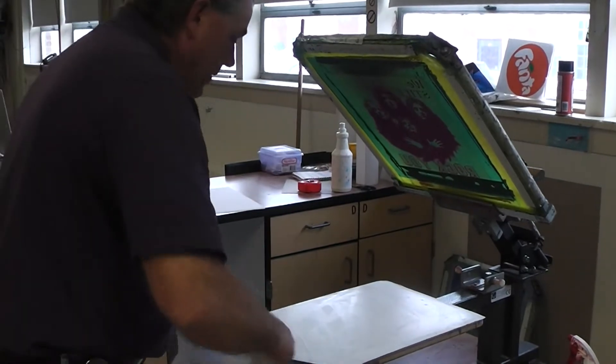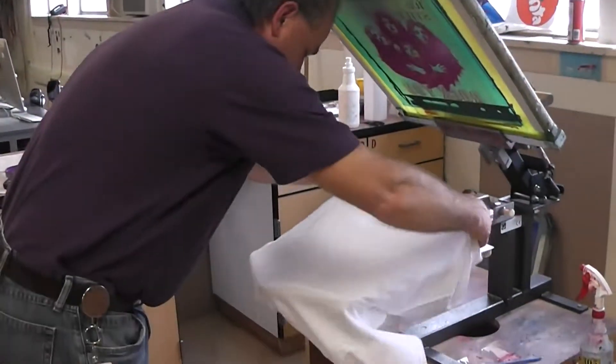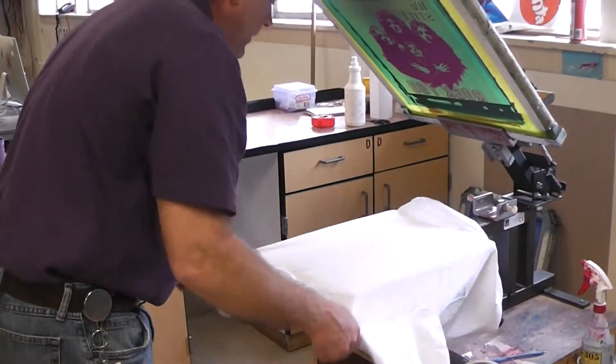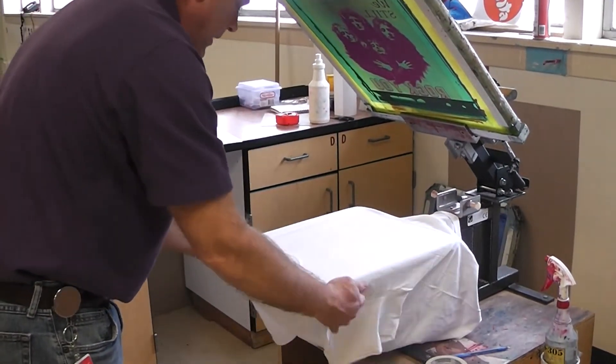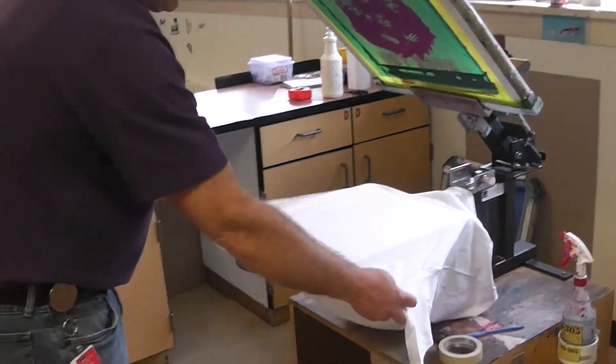So, we're going to take the shirt. Now, this is an XL. We centered our image on the platen. So, we want to get an image that is centered on our t-shirt. So, we have to lift the shirt up centered and straight.